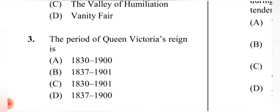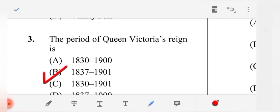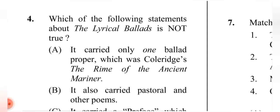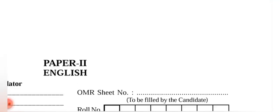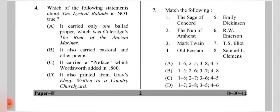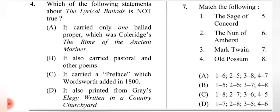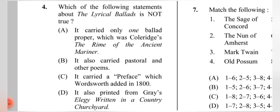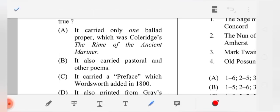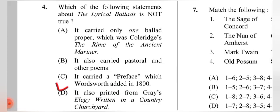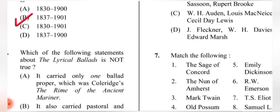Question 4: Which of the following statements about the 'Lyrical Ballads' is NOT true? The correct answer is (D): it says the volume included Gray's 'Elegy Written in a Country Churchyard,' which is incorrect. Statements A, B, and C are all correct.